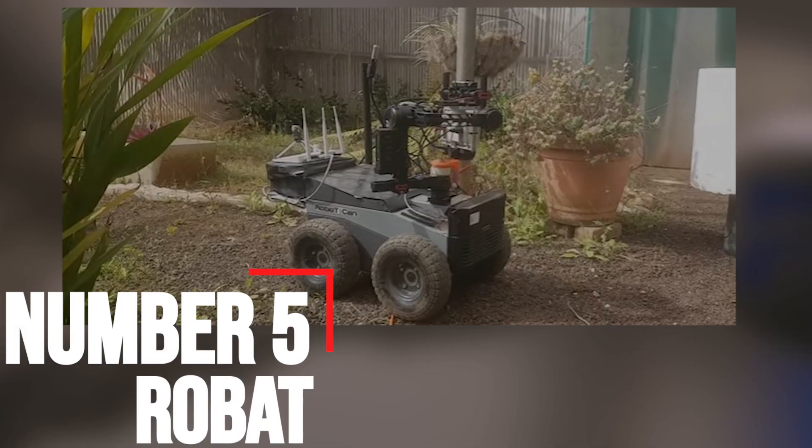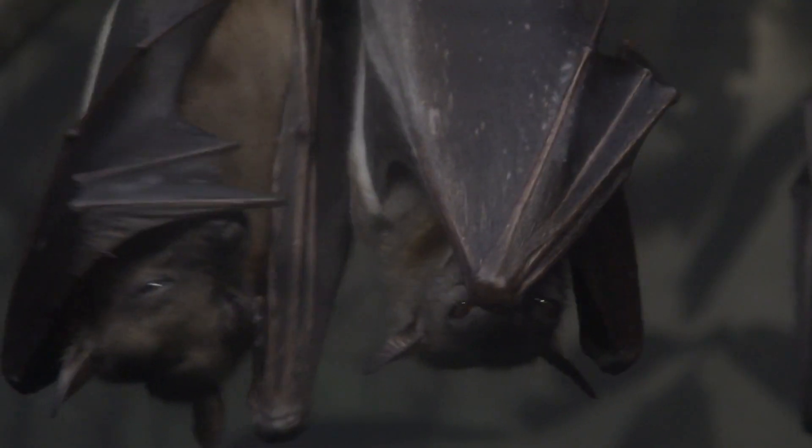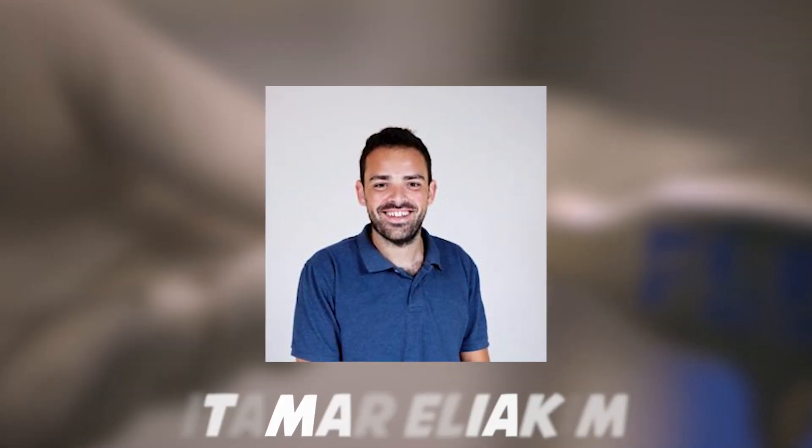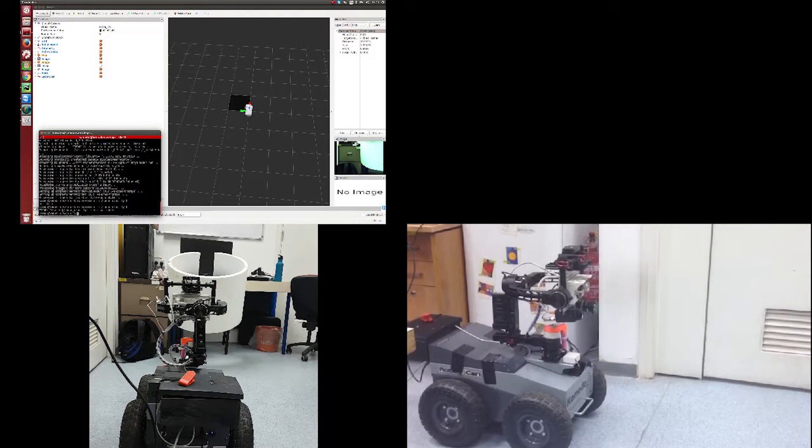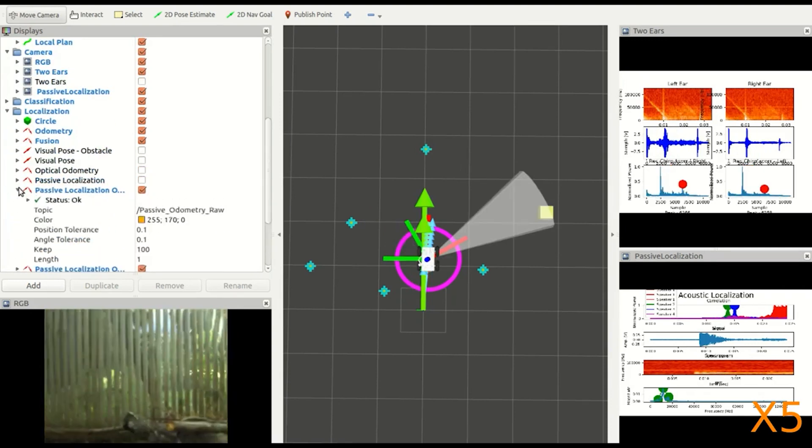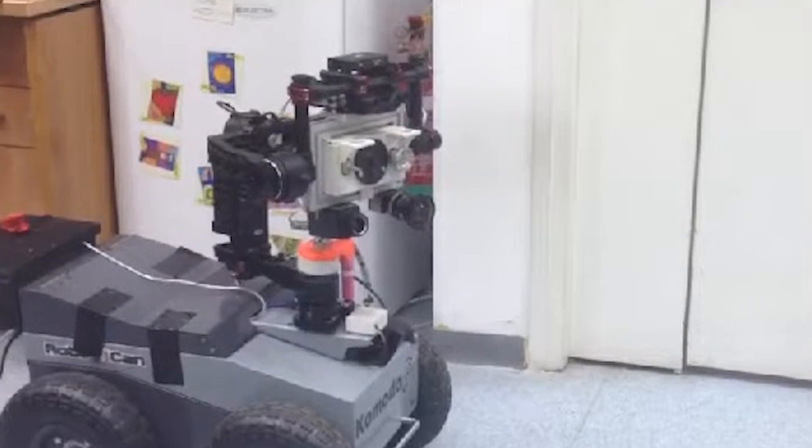Number five, robot bat. If bats frighten you, you'll want to steer clear of Tel Aviv University graduate student Itamar Eliak-Kim's latest invention, an autonomous robot that navigates in the dark like a flying rodent. Robot bat doesn't actually fly. It scoots on the ground on four wheels. But like its animal inspiration, robot bat uses echolocation to map its environment based on sound.